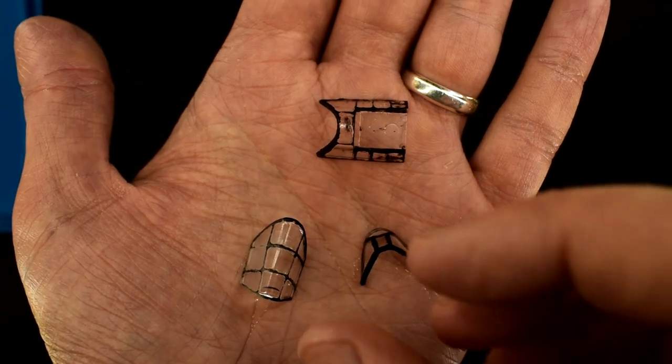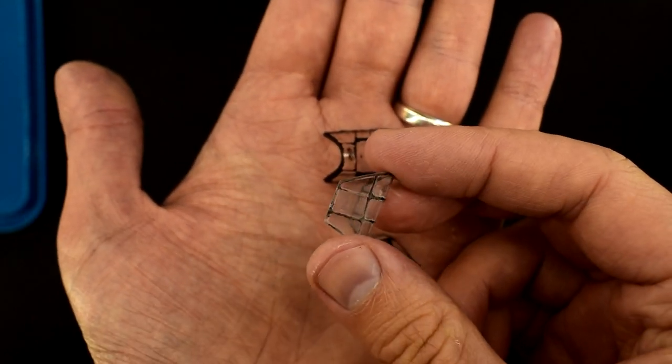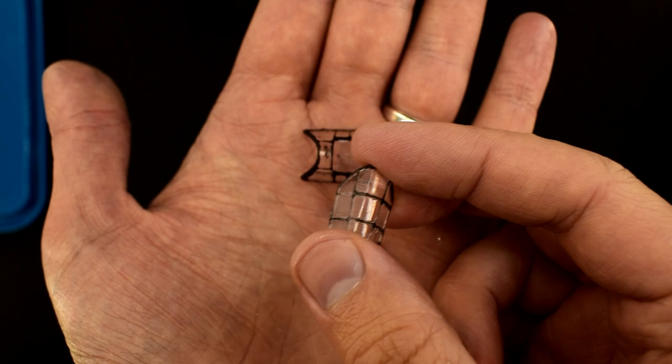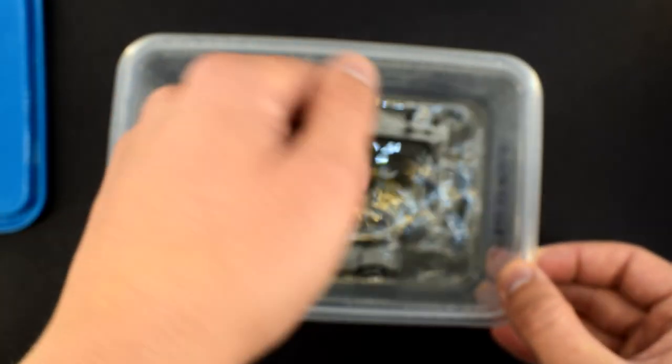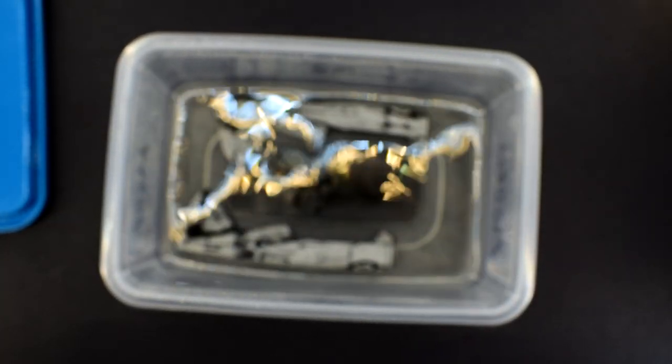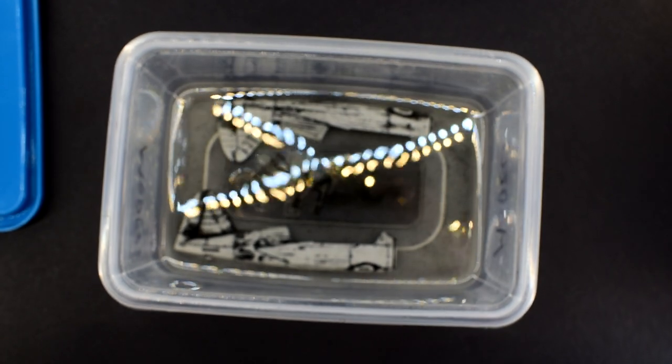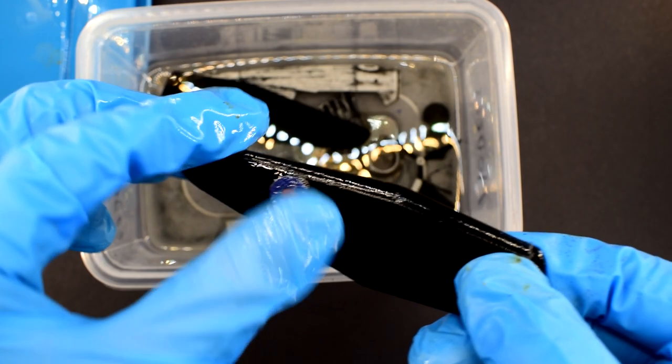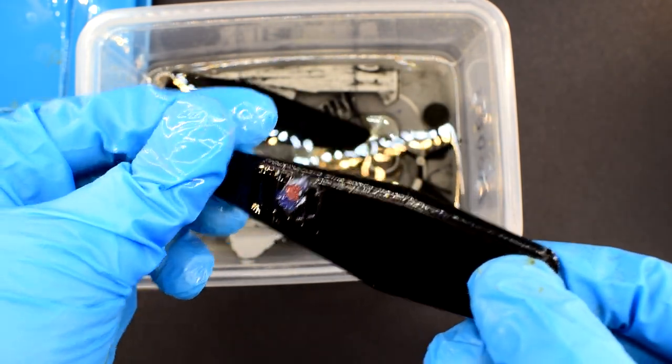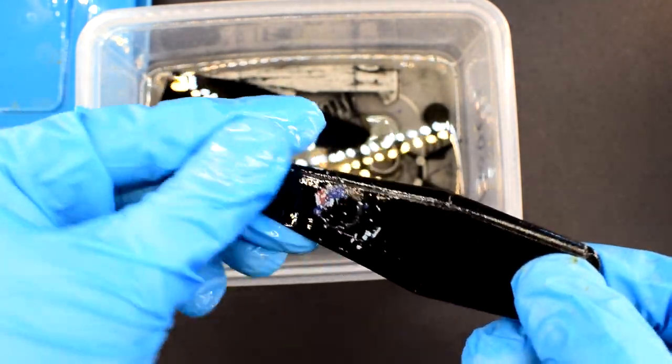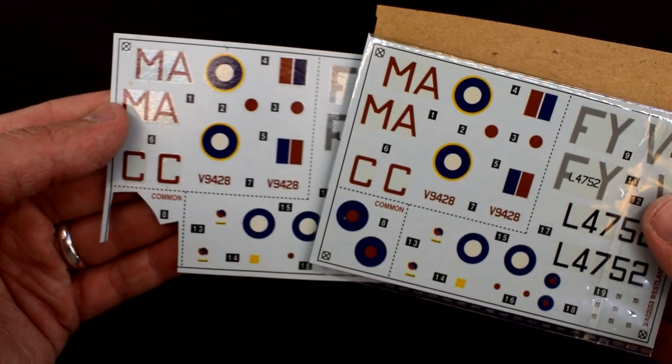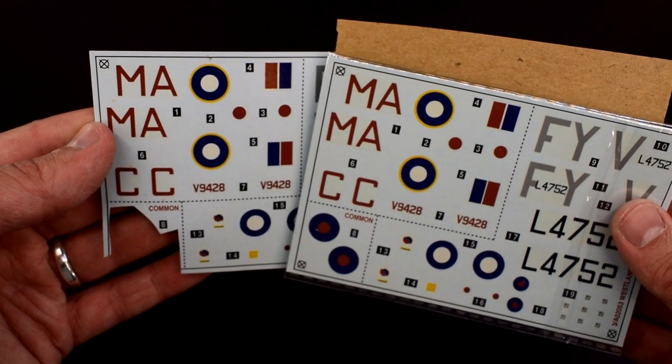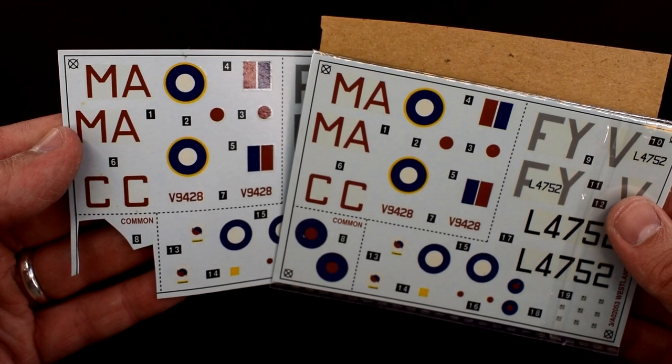But what about the clear parts? Fortunately, you can do the exact same thing. The IPA won't react with this clear plastic and after about 20 minutes the paint is ready to be removed. As a small side note though, if you do this with parts that have decals on, the decals will dissolve. So make sure you have some spares or alternative ones you want to use when you come to build your kit.